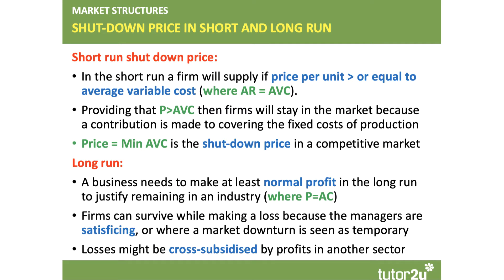However, in the long run, a business needs to make at least normal profit. Because we include normal profit in the average cost of a firm — the opportunity cost of capital invested in a business — you cover your costs and make normal profit where price equals average cost. That's the long-run shutdown decision. Firms can survive while making a loss because managers are not solely looking to maximise profit, or the market downturn could be seen as temporary. You may also be in more than one market, in which case a loss in one sector might be cross-subsidised by making good profits in another.